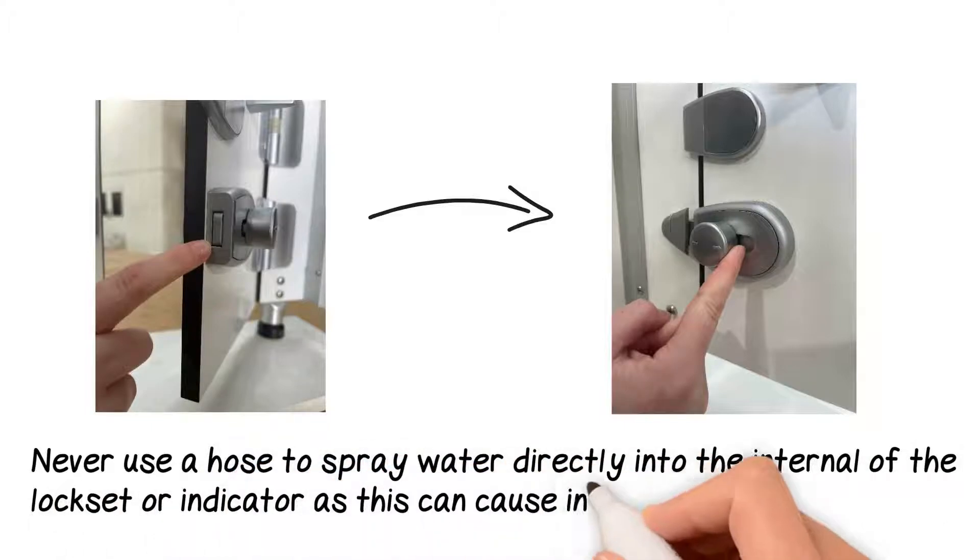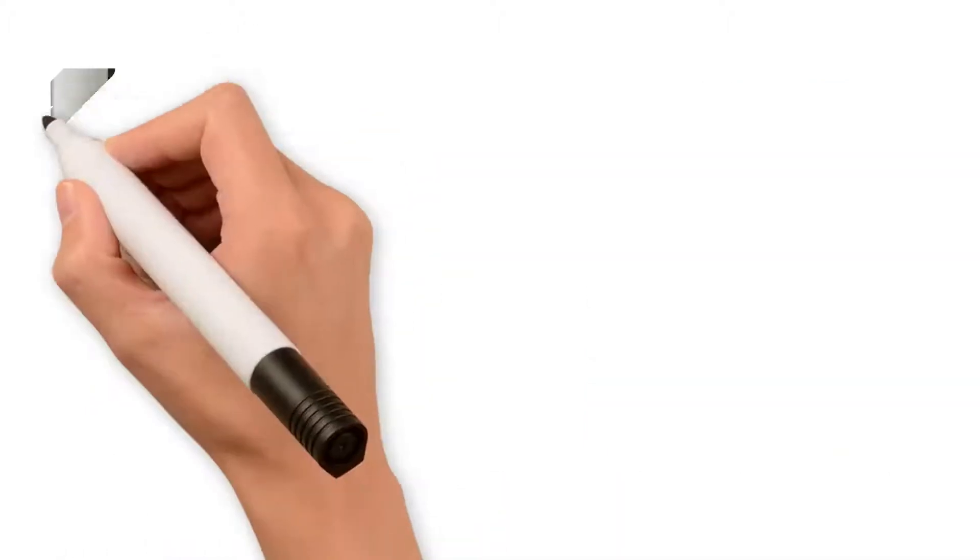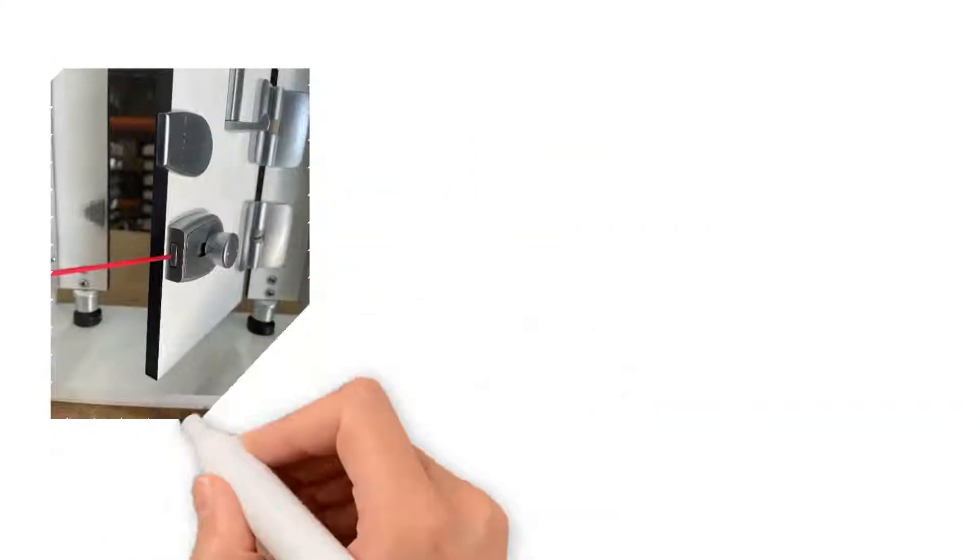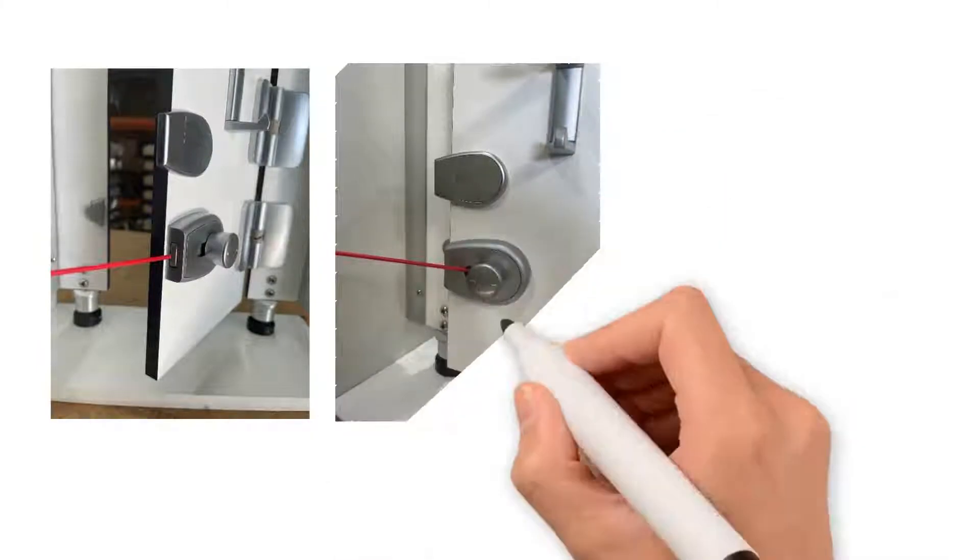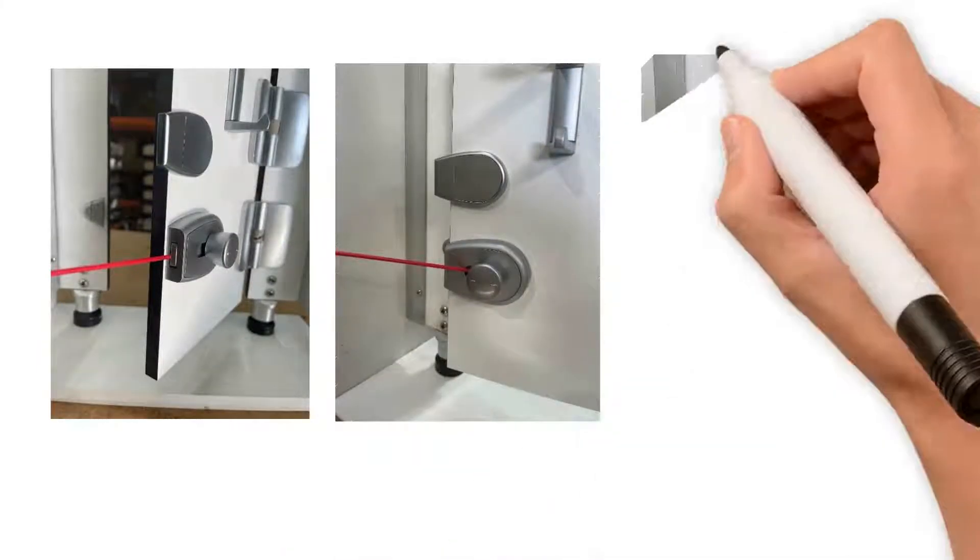Never use a hose to spray water directly into the internal of the lock set or indicator, as this can cause internal damage. For added protection of your lock, spray silicon spray onto the tongue and through the tongue slot. When spraying through and around the neck slot, ensure that you open and close the lock to work the spray around the internal mechanisms.